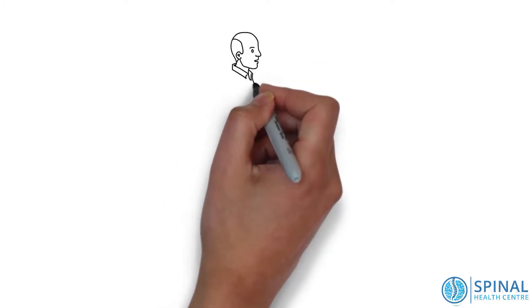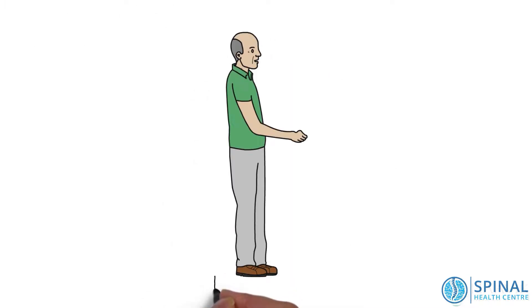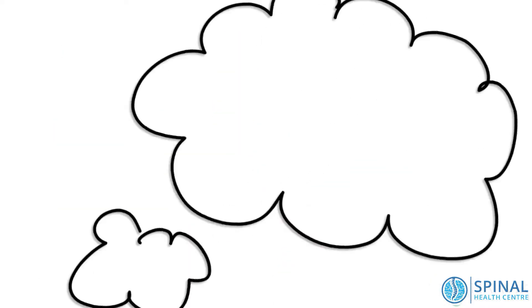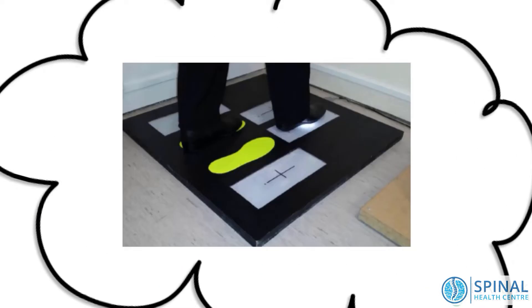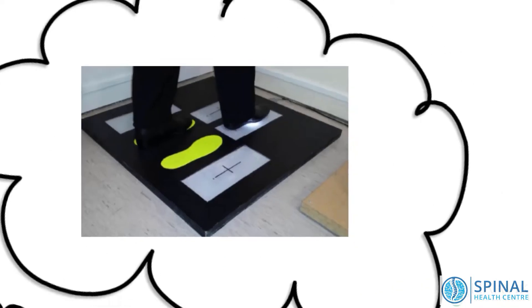One of the outcome measures they looked at was called the choice stepping reaction time. This was tested by getting participants to stand on a platform that had four panels that could light up. When a panel lit up, they'd have to stand on it as quickly as they could.